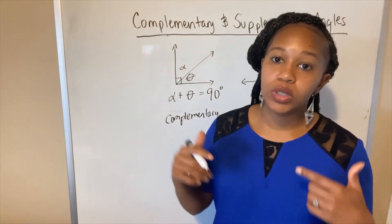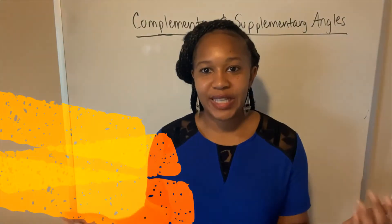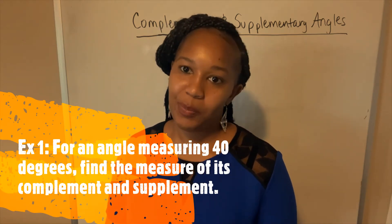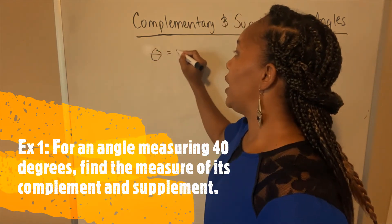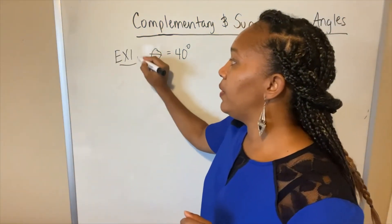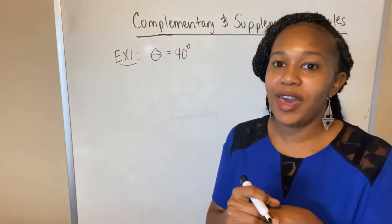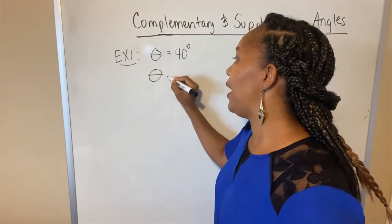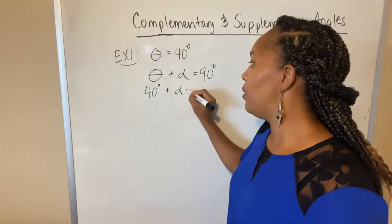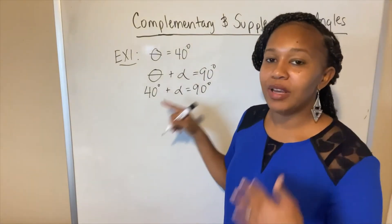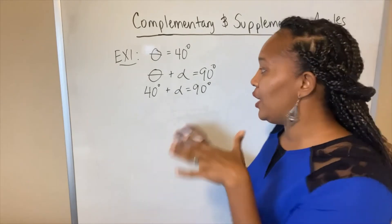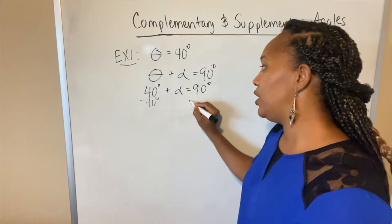Now let's look at some examples using these definitions. For example one, it says: for an angle measuring 40 degrees, find the measure of its complement and its supplement. So we have an angle — we'll call it theta — and its measure is 40 degrees. First, we want to find its complement. Remember the definition of complement: the two angles add up to 90 degrees. If we call its complement alpha, then theta plus alpha equals 90 degrees. We know theta is 40 degrees, so we need to figure out: 40 plus what gives you 90?